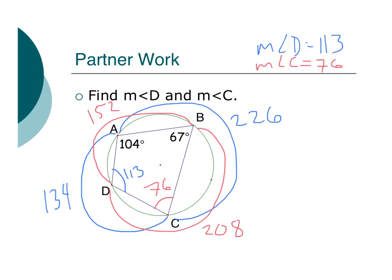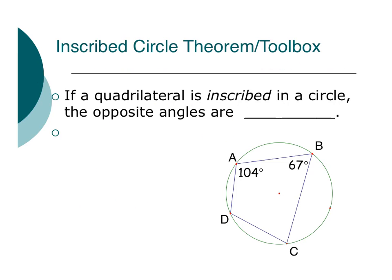Now when I'm looking at this, I'm noticing something. 104, 76, that adds up to 180. 113, 67, that also adds to 180. Is there something about opposite angles in a quadrilateral that have been inscribed in a circle and being supplementary? I wonder if there's anything to do with that.